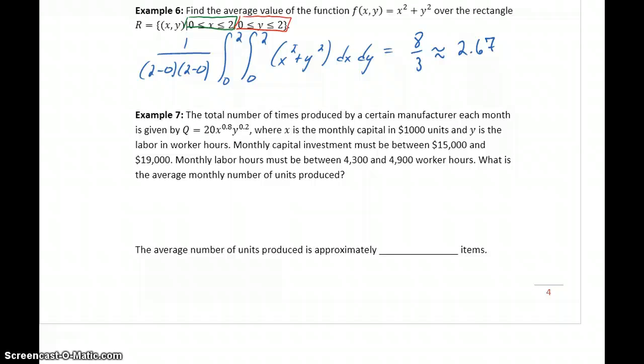Now we want to look at an actual application question. The total number of units produced by a manufacturer each month is given by this function q, where x is the monthly capital in $1,000 units and y is labor in worker hours. Monthly capital investment must be between $15,000 and $19,000, and monthly labor hours must be between 4,300 and 4,900 worker hours.